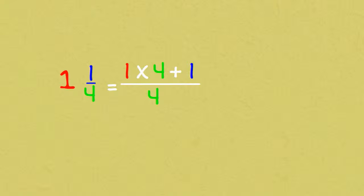We do this all in the top section, which is the numerator. We keep the denominator the same, and we get five-fourths, which is an improper fraction.